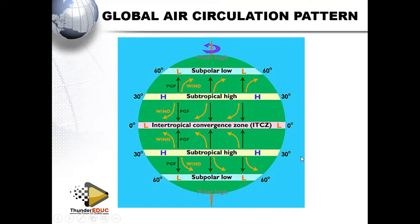This global air circulation is divided into sections. We have the Intertropical Convergence Zone — the ITCZ — we have the subtropical high pressure cell, then we have the subpolar low, and we have the polar high.